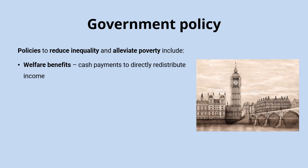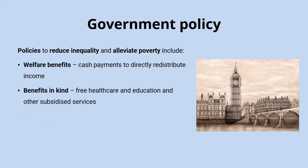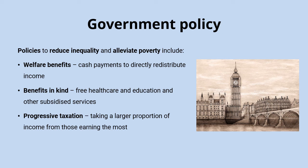Benefits in kind are another form of redistribution. You might not think about the redistributive effects of free healthcare and education, but in the UK we are used to these things being commonplace. Allowing free access to these services irrespective of income is really important in trying to reduce inequality, because it gives everyone access to them regardless of what they earn.